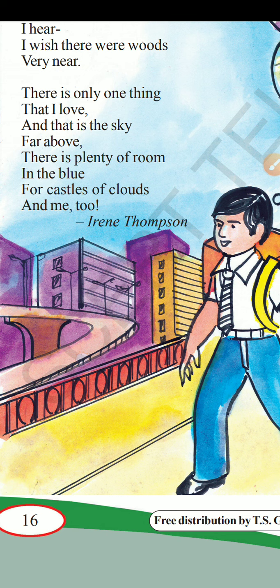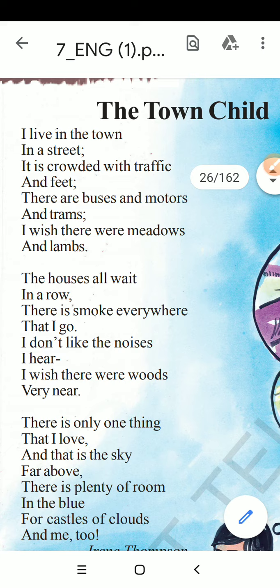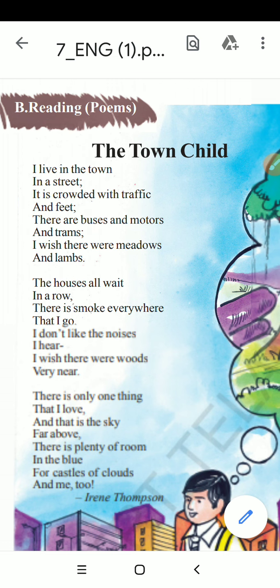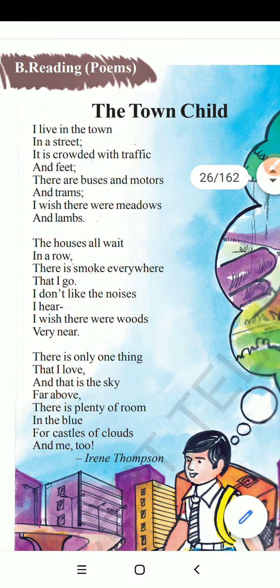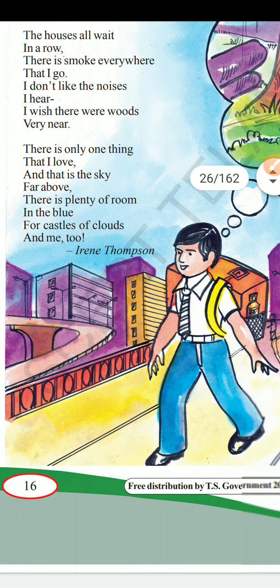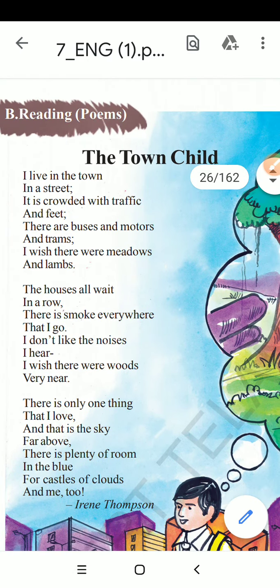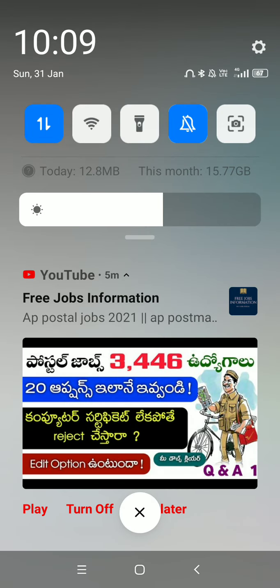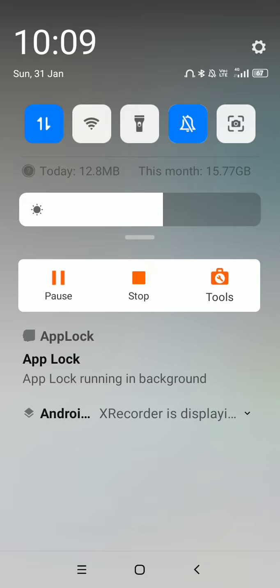So he only likes the sky in the town. The town child is not at all interested to stay in the town, and he is disclosing his desire to stay in a village. This is about the Town Child, written by Irene Thompson. I hope you understood the poem well and liked this video. Please kindly subscribe to the channel so you can get all notifications. Thank you very much for watching. We will meet again in the next poem, 'The Country Child.'